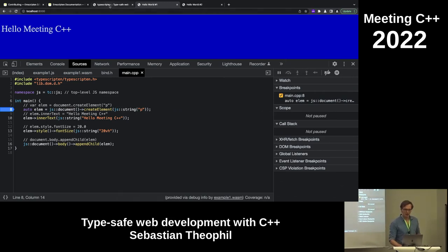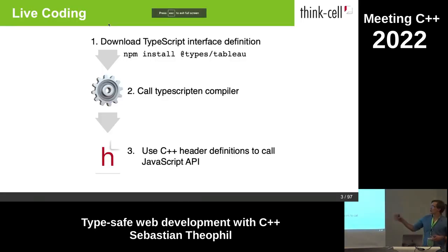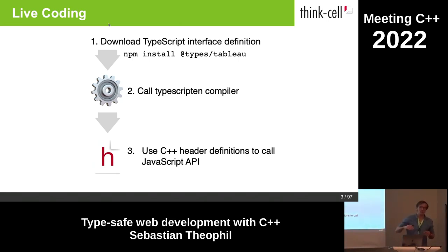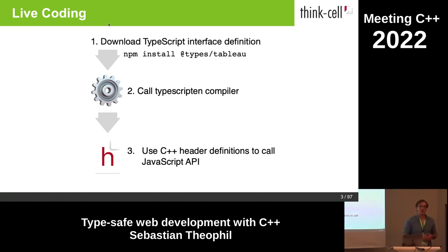So let me tell you what you've just seen. What you saw was the TypeScript tool in action. It takes type information for a JavaScript library from TypeScript — using TypeScript interface definitions — and compiles those type definitions into C++ header files that allow type-safe programming to a JavaScript API.